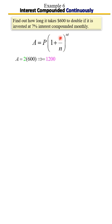R is your rate — that's 7%, which as a decimal is 0.07. N is the number of times compounded, which is monthly, so N is 12. We raise it to the 12 times T. We don't know T — that's what we want to find out: how long.